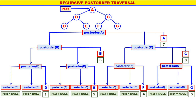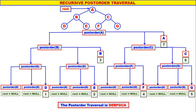So the first to be displayed is D, second is E, third is B, fourth is F, fifth is G, sixth is C, and seventh is A. Therefore the post order traversal of the given tree is D, E, B, F, G, C, A. This is the post order traversal of the given tree. The recursive post order is quite simple and straightforward.